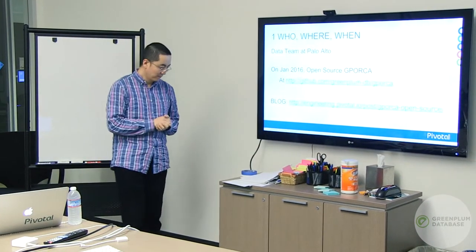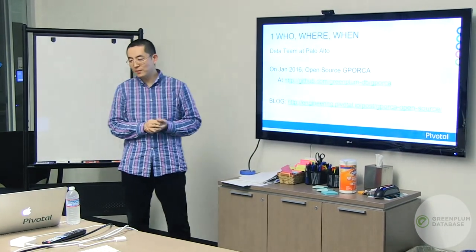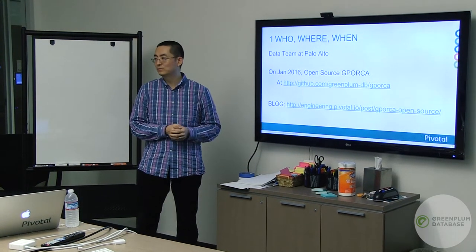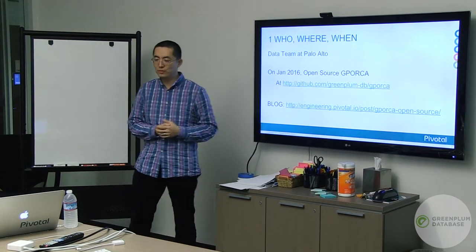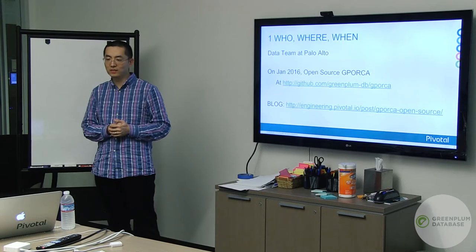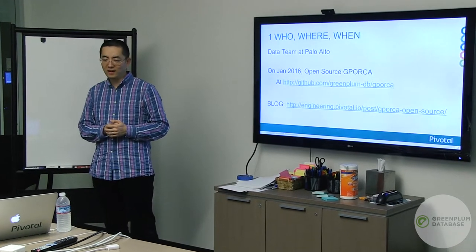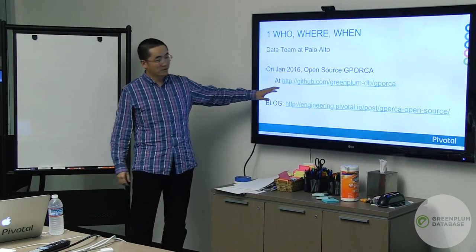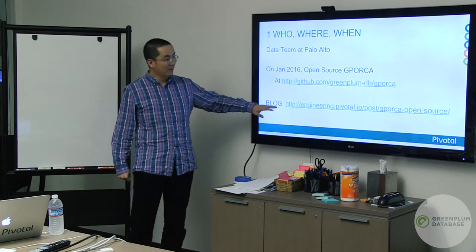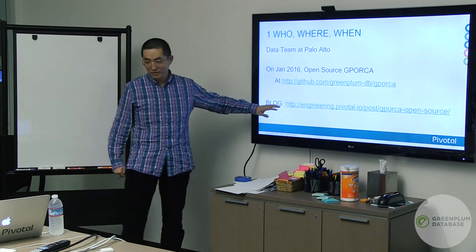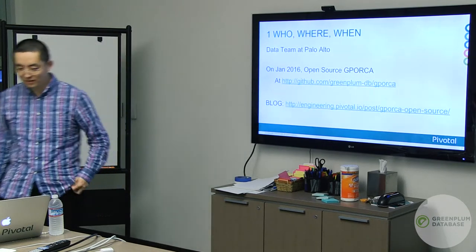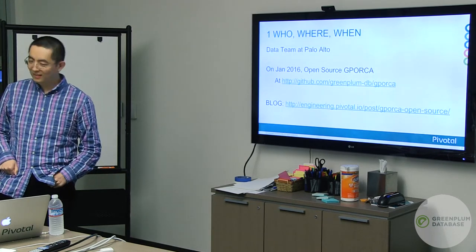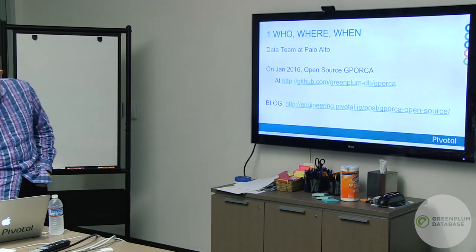Basically, the GPDB project is done by the data team in Palo Alto. We open sourced in January 2016, and the location for the open source is under GitHub. You can go there and find the original blog where we announced to the world the first — and so far still the only — open source query optimizer.